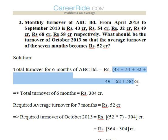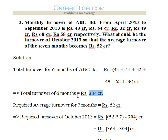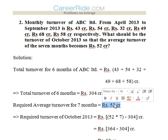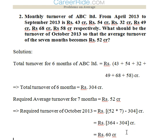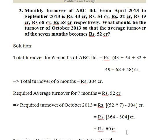Adding 43 to 58, we get 304 crore as the total for 6 months. The required average turnover for 7 months is 52 crore, so the total value of turnover for 7 months will be 7 into 52, which is 364. So 364 minus 304 — that is the total turnover of 6 months — gives us 60 crore as the turnover value for October.